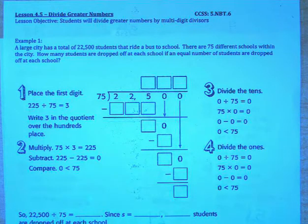Example 1 says that a large city has a total of 22,500 students that ride a bus to school. There are 75 different schools within the city. How many students are dropped off at each school if an equal number of students are dropped off at each school? So we're going to do 22,500 divided by 75.